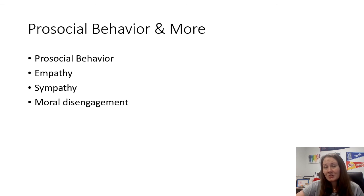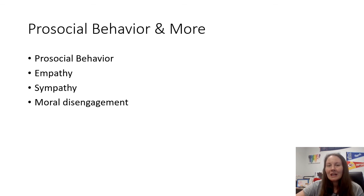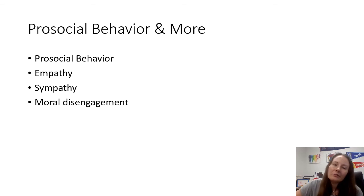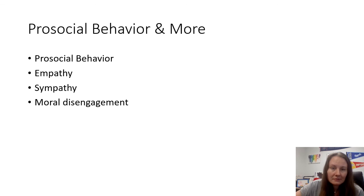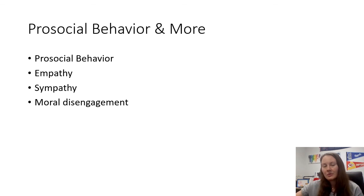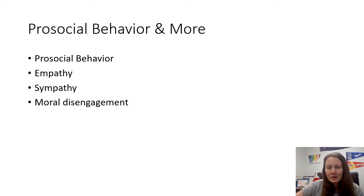Moral disengagement is when someone justifies an action that isn't typically considered high morality — rationalizing undesired behavior. For example, 'they deserved it.' We see this in society frequently — 'they're bad, so they deserved what I did to them.' This is also related to victim blaming. People try to justify their bad actions by placing blame on someone else.